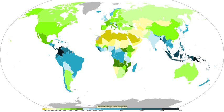Developing countries have noted that their populations show seasonal weight fluctuations due to food shortages seen before the first harvest, which occurs late in the wet season. Tropical cyclones, a source of very heavy rainfall, consist of large air masses several hundred miles across with low pressure at the center and with winds blowing inward towards the center in either a clockwise or counterclockwise direction. Although cyclones can take an enormous toll in lives and personal property, they may be important factors in the precipitation regimes of places they impact, and areas in their path can receive a year's worth of rainfall from a tropical cyclone passage.